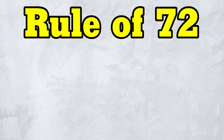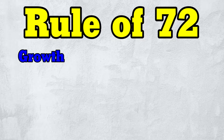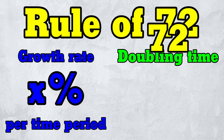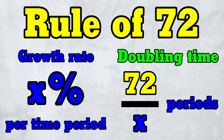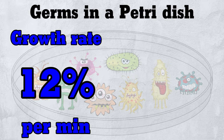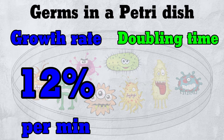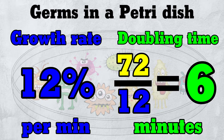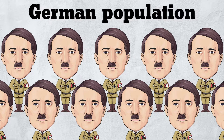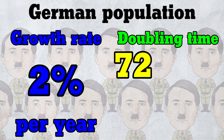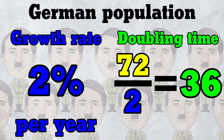In general, the rule of 72 says that if a quantity is growing at a rate of x% per time period, the doubling time is roughly 72 divided by x periods. So if germs in a petri dish are growing at 12% per minute, they double roughly every 72 divided by 12, or 6 minutes. And if a population is growing at 2% per year, it doubles roughly every 72 divided by 2, or 36 years.